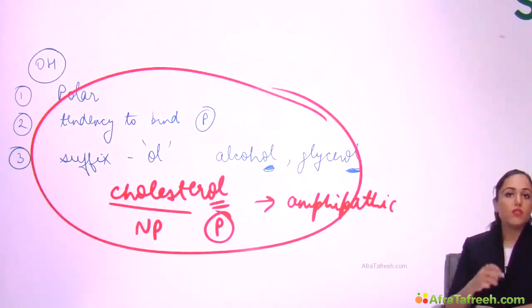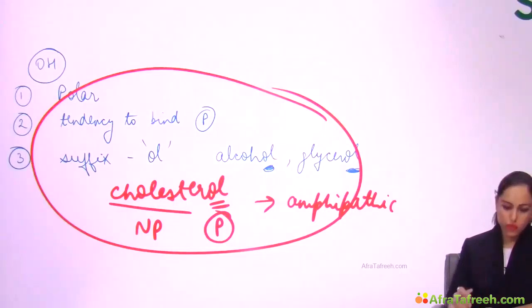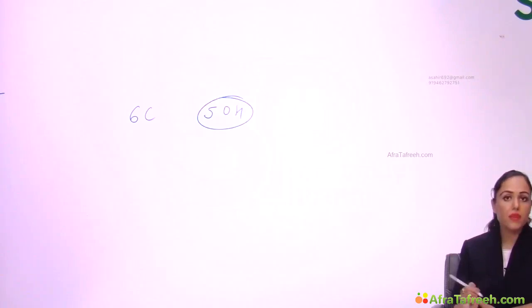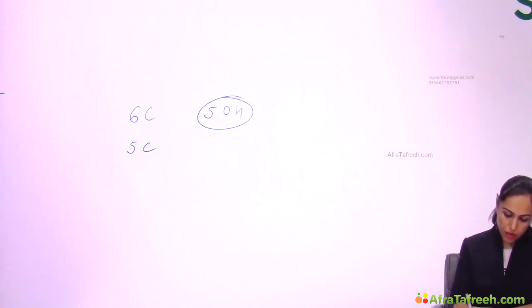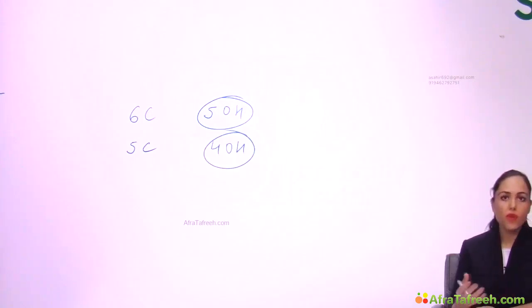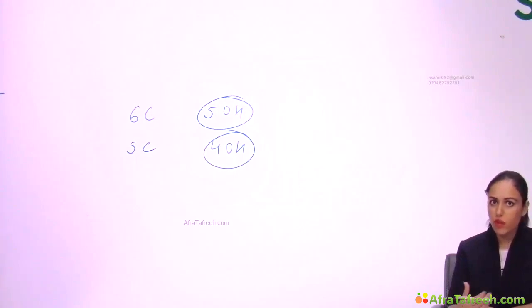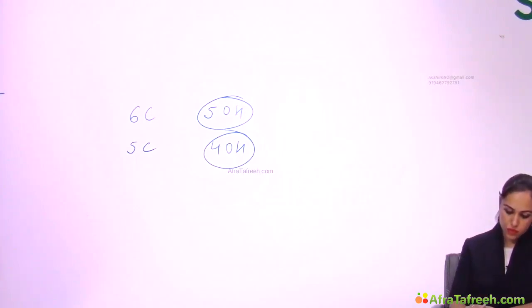Now a specific point for carbohydrates: when OH is present in carbohydrates, if a carbohydrate has six carbons then it will have five OH groups; if it has five carbons then it will have four OH groups. So the number of OH groups is one less than the number of carbons in a carbohydrate.